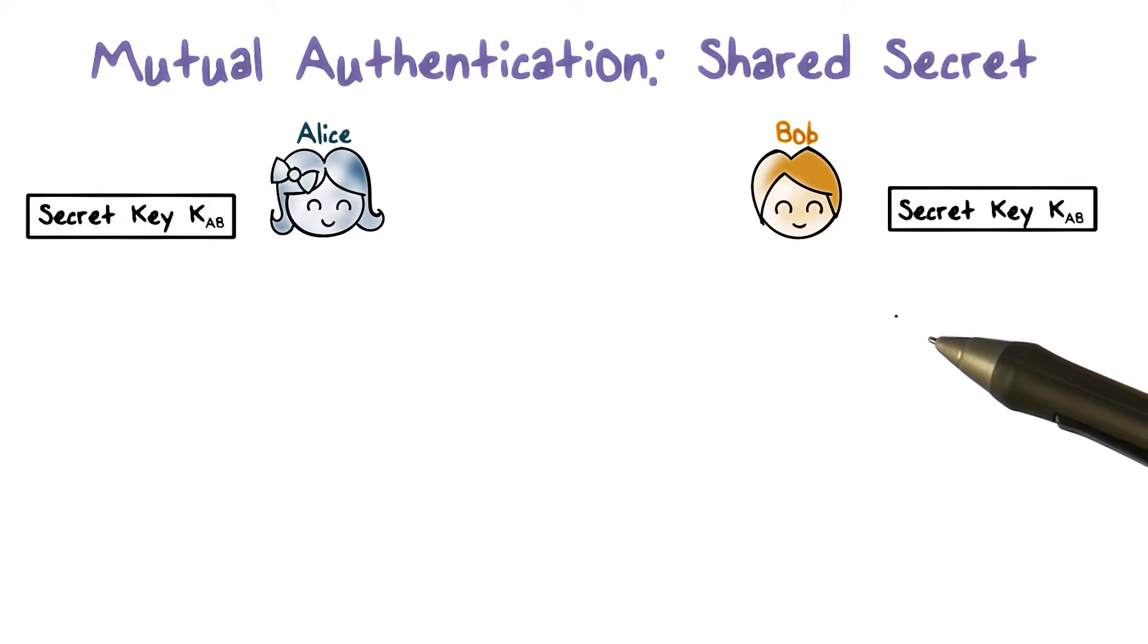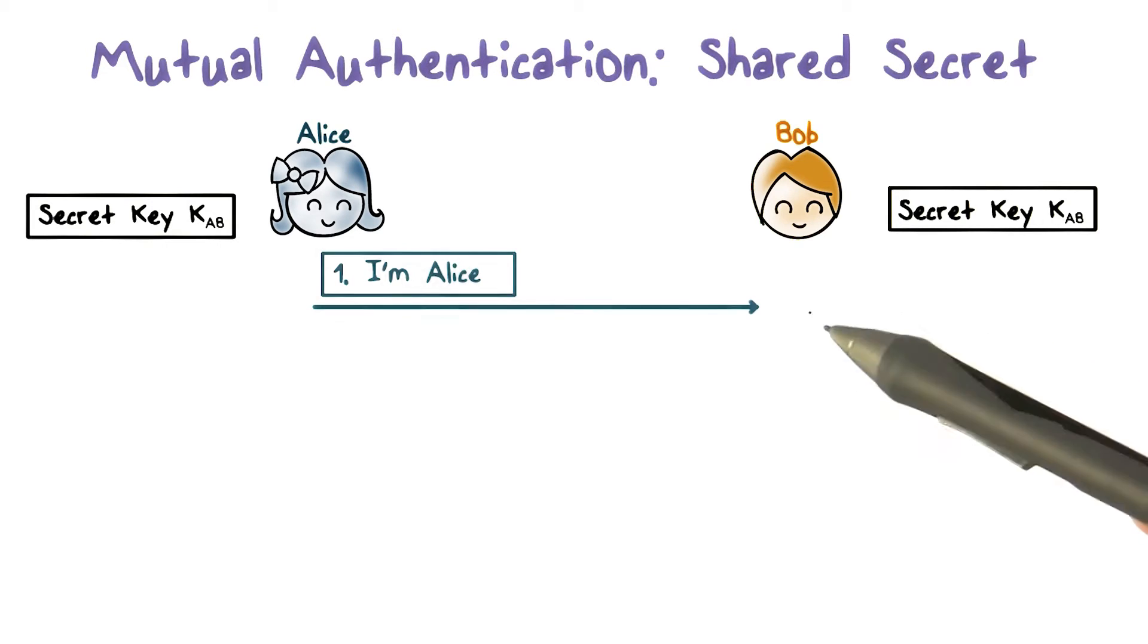Here's an authentication protocol using symmetric cryptography. First, Alice says to Bob, hey, I'm Alice.